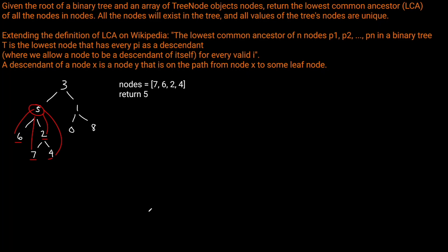This problem may seem complicated because we're given a list of nodes, but the fact that all the nodes exist in the tree makes this problem extremely easy. It's going to be a carbon copy of how we solved LCA of a binary tree 1, except instead of checking whether the current node equals P or Q, we just check if the current node is in this list of nodes. If it is, we return true to the next level.